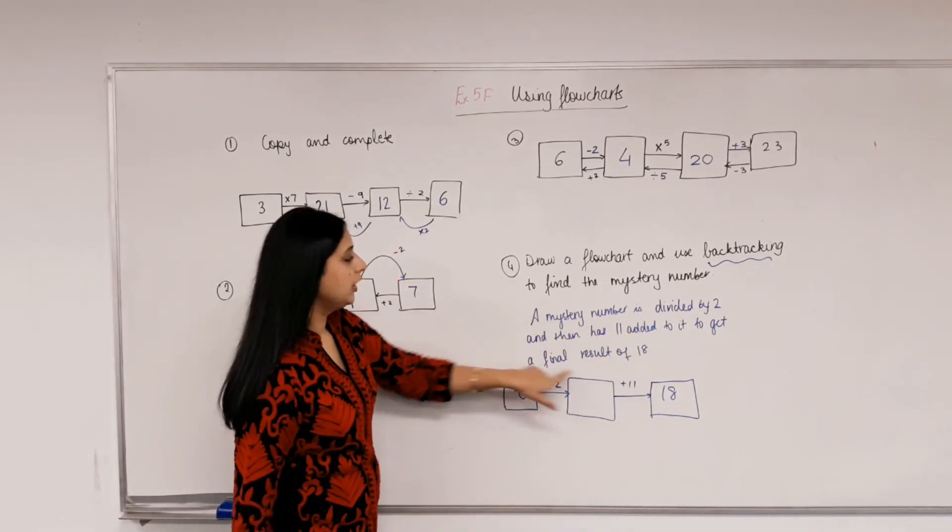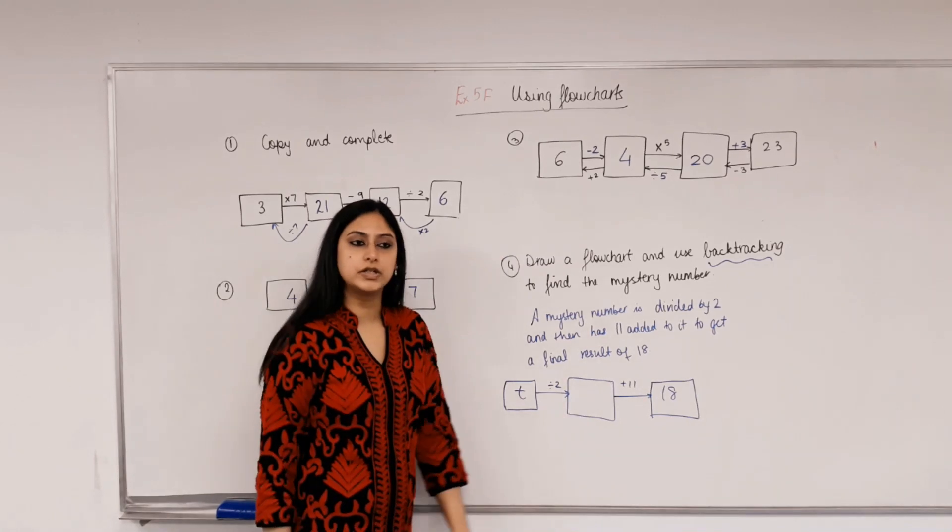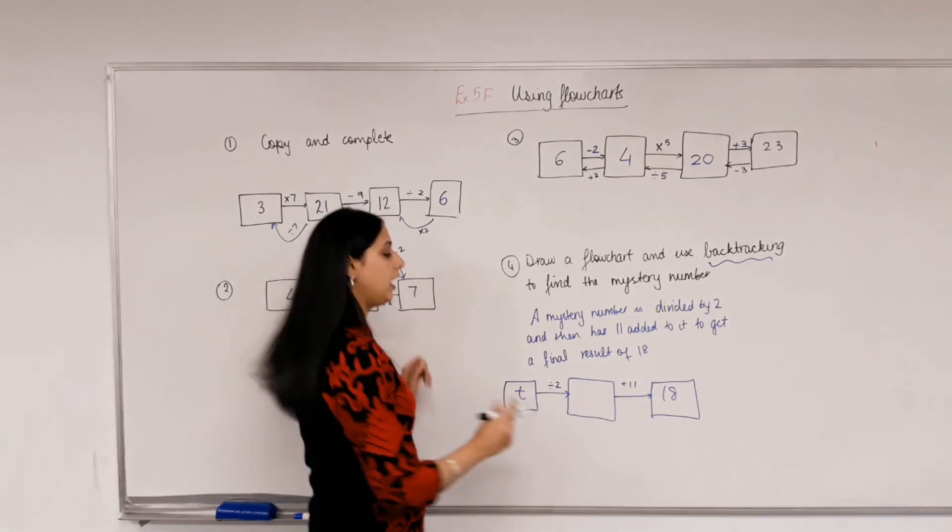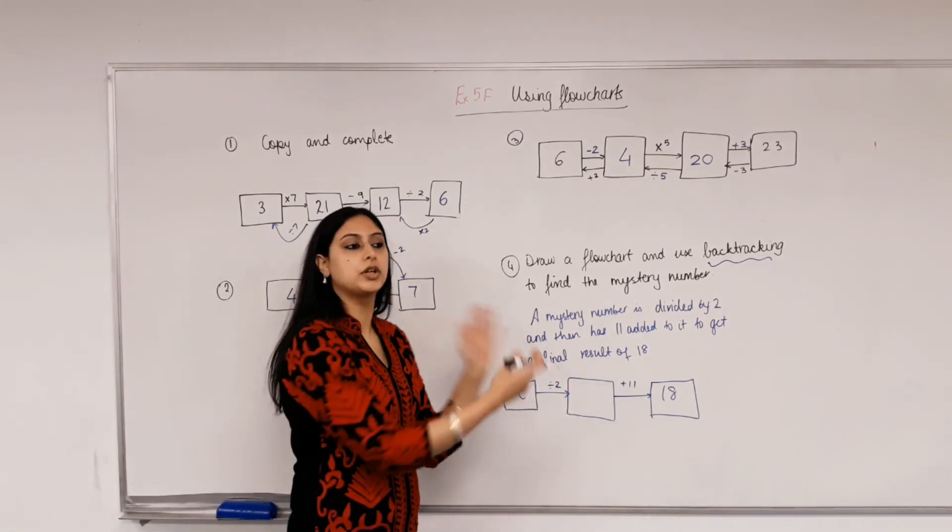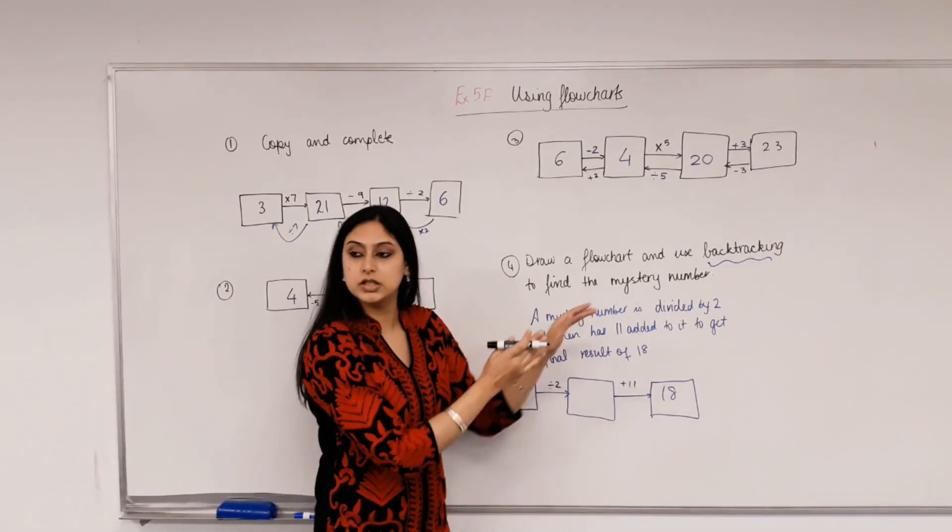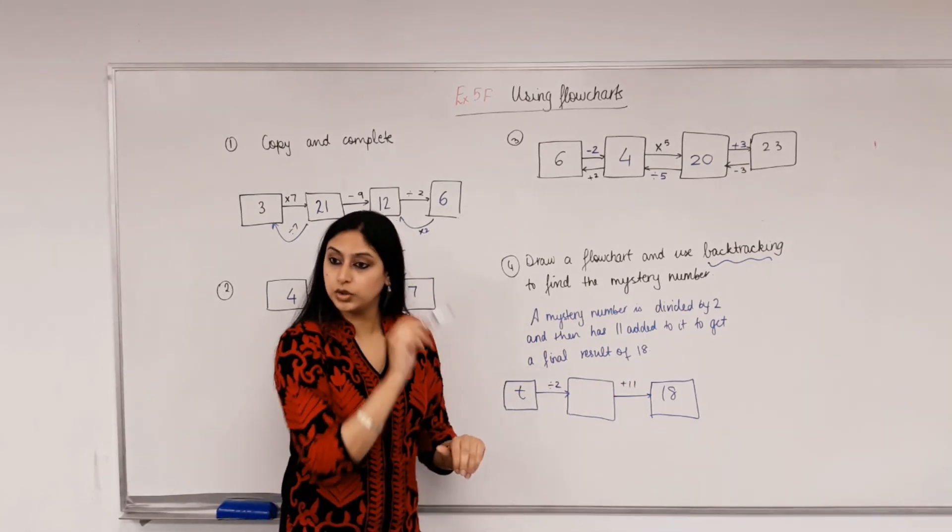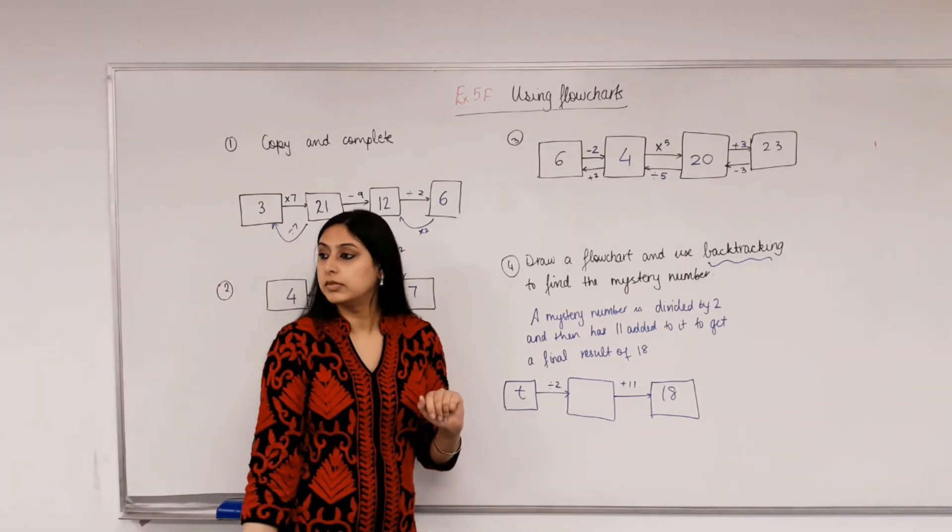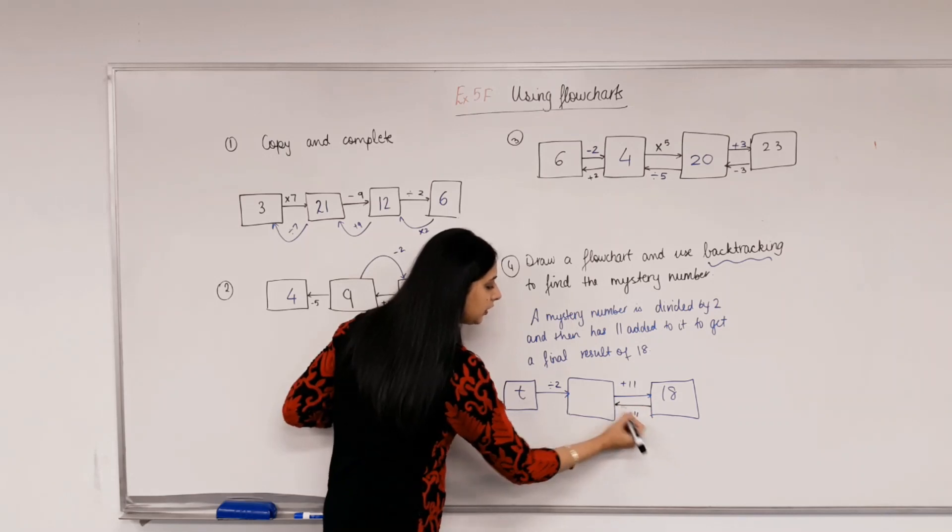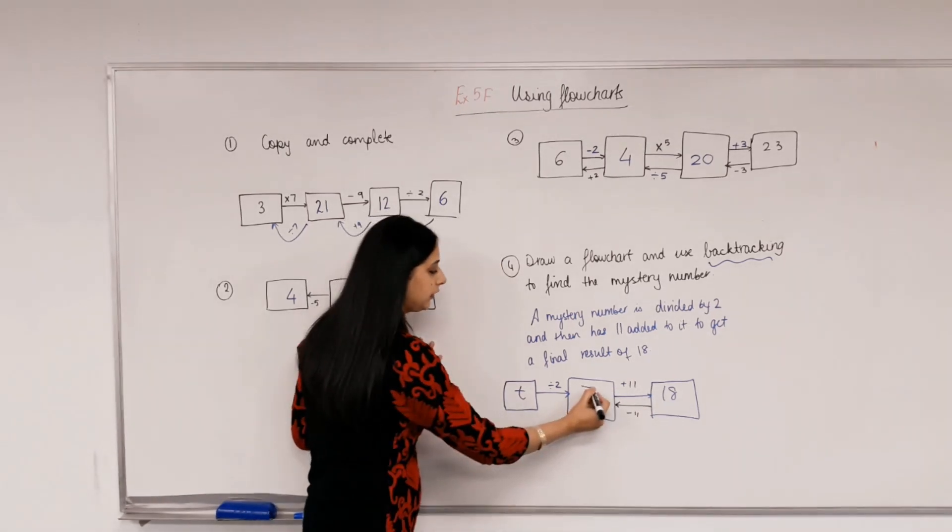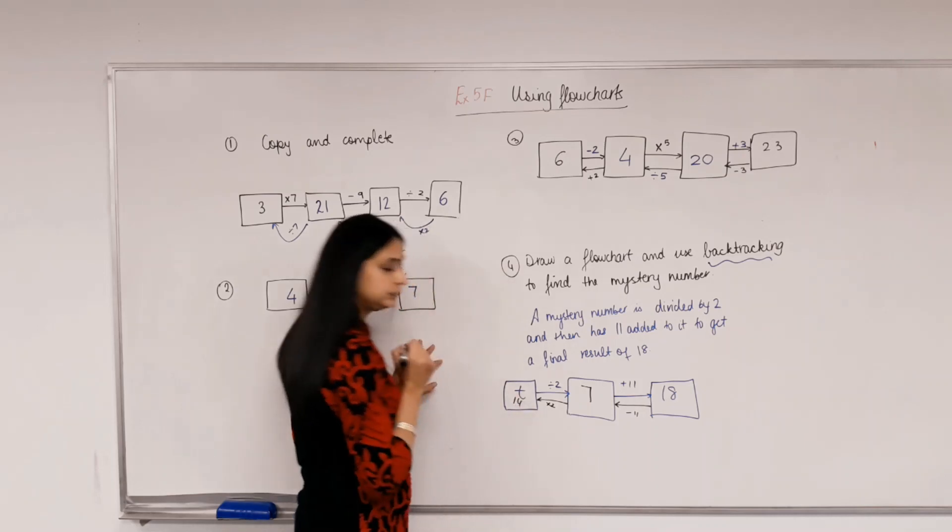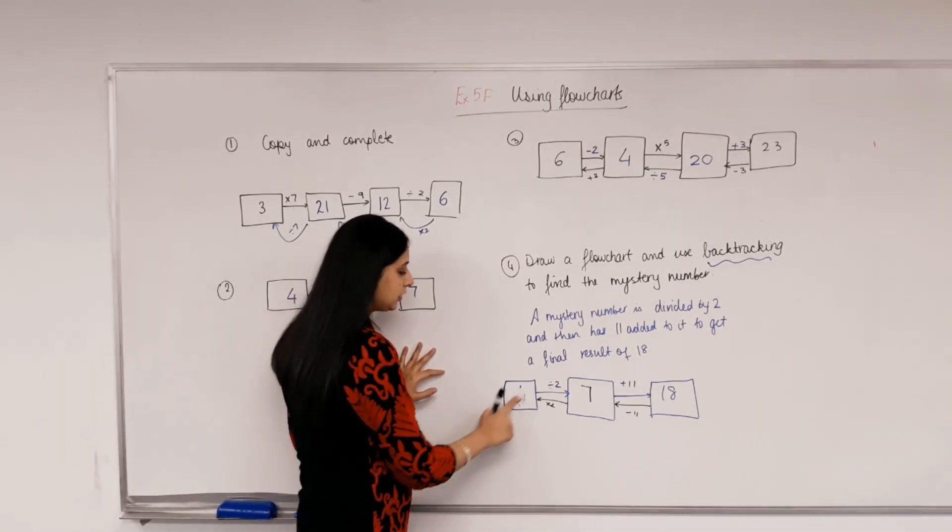So, mystery number is divided by 2, has 11 added to it to get a final result of 18. We have to find this mystery number. Is that the correct flowchart? Okay. Now, I need to backtrack. That means go in the opposite direction and find my original number. So, I've got the final result and I know the operations that were done to get the final result. So, I'm going to undo those operations, do the opposite of them and backtrack to get my mystery number. Make sense? Alright. So, what's the opposite of plus 11? Minus 11. So, what's 18 take away 11? 7. And what's the opposite of dividing by 2? Times by 2. So, what should t be equal to? 14. Does that make sense? So, t equals 14.